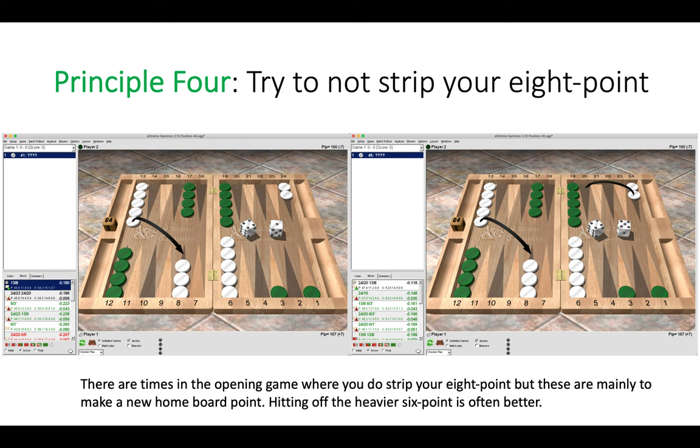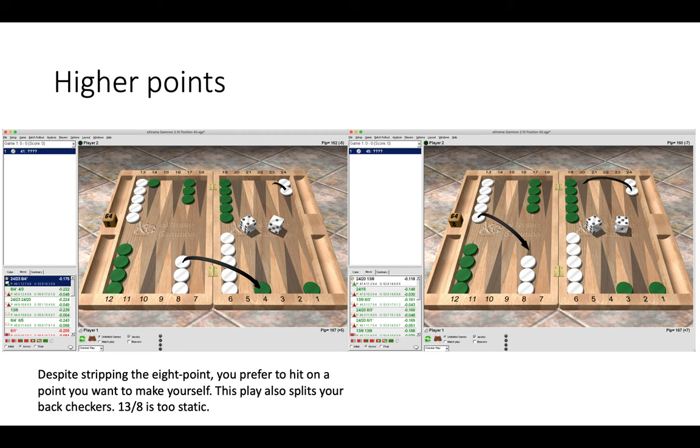Like all the rules in backgammon, they only hold true about 95 percent of the time and there will be exceptions that you will find. But through exceptions you will learn more, and that's the importance of looking at these positions as a starting point and then playing around with them further to yield fresh insights.